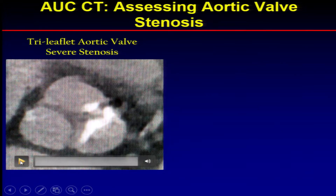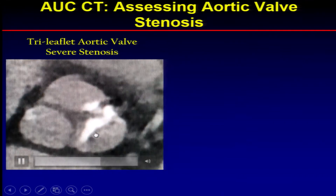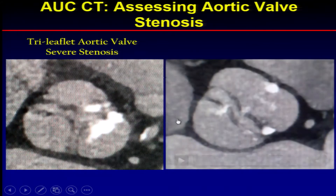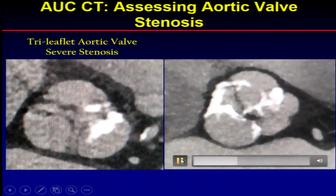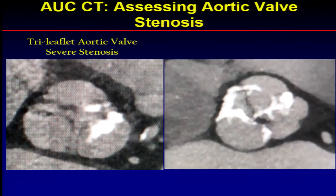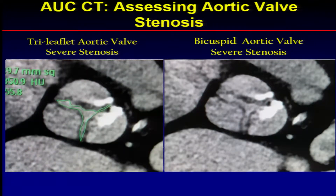This is an example of someone with severe aortic stenosis. You can appreciate there's a lot of calcium on the valve and the valve does not open widely. We're also good with CT in terms of looking at the type of valve — the first was a tricuspid valve, this is a bicuspid valve, also with severe stenosis. We're able to planimeter these areas; in this particular patient the aortic valve area was 0.5 cm², very critical AS.